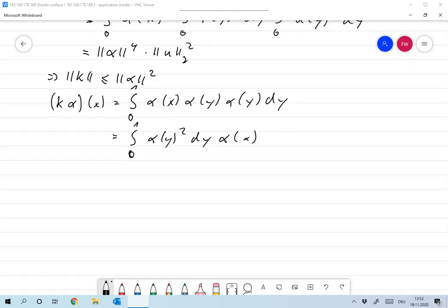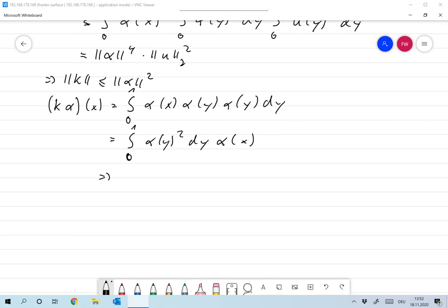And that means that α(x), or α, is an eigenvector, eigenfunction, of K, with respect to the eigenvalue, so integral 0 to 1, α(y)² dy, so that's ||α||².